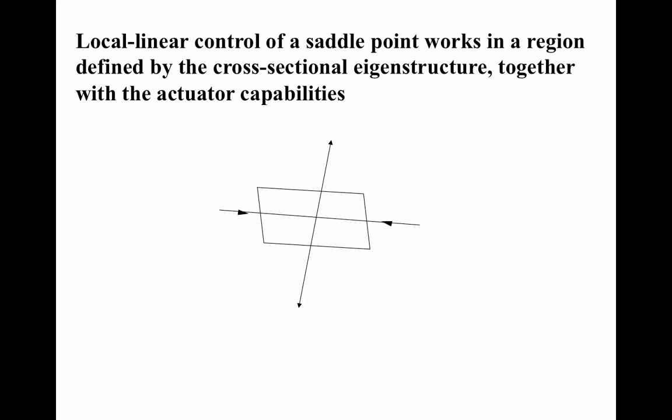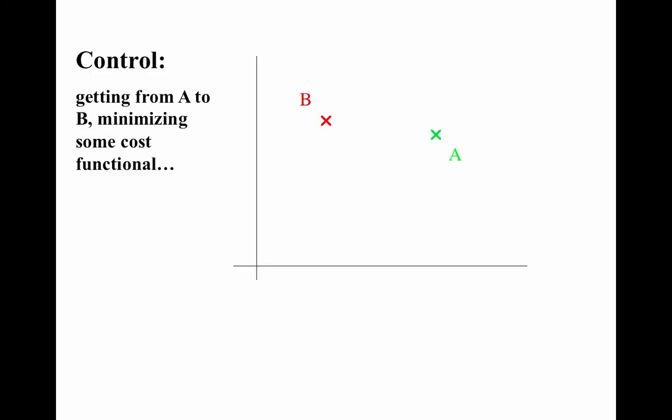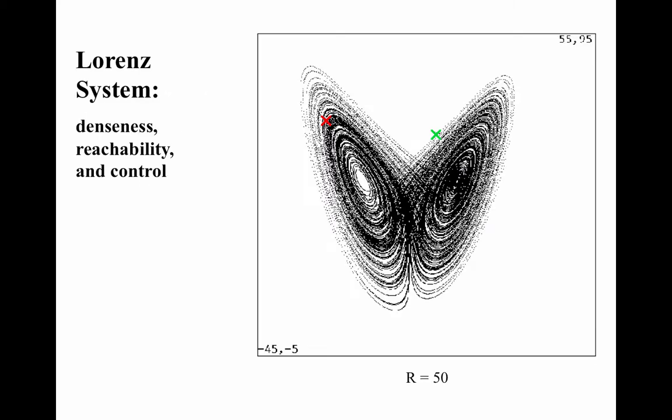What do I mean by control? I mean get me from some point A in the state space — the green one — to some other point B, while minimizing or maximizing some cost. I might want to do it as fast as possible and not care how much gas I use, or try to do this with the least amount of gas. Here's an example: controlling the Lorenz system. That is, given the dynamical system — the Lorenz equations — can we design a controller that manipulates the parameters so as to get from this green X to that red X?